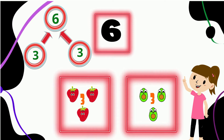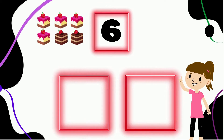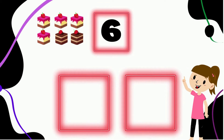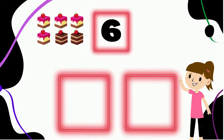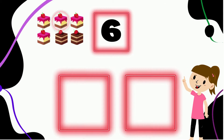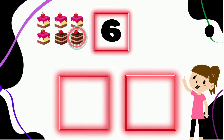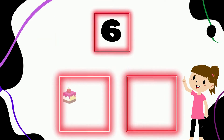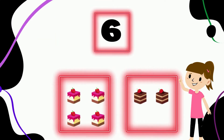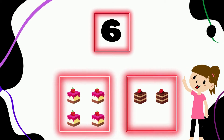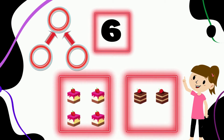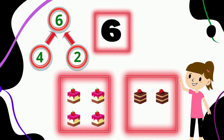Now let's have a look at another way to compose the number six. We've got two different kinds of cake slices here. Count with me and let's see how many strawberry flavored cakes we have and how many chocolate flavored. We have one, two, three, four strawberry flavored cakes, and one, two chocolate flavored. Let's separate them in the boxes below. Any guesses? That's right — four and two make the number six. Well done!